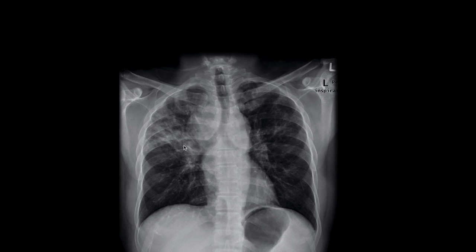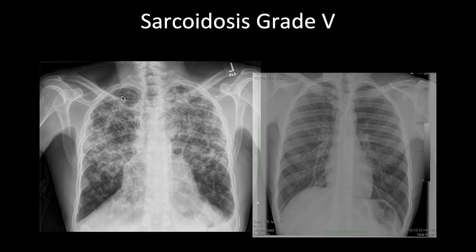In this patient with sarcoidosis, there are huge hilar masses representing enlarged lymph nodes. In the apices, there are lots of lines with air still present but obscuring normal lung markings — these are areas of fibrosis. A more severe example shows extensive lines throughout both lungs obscuring normal lung markings, still with air present, in advanced sarcoidosis.